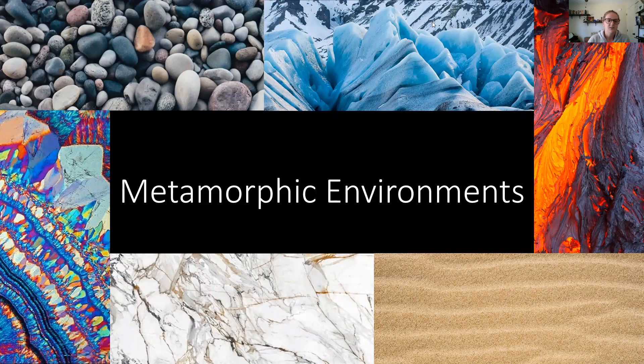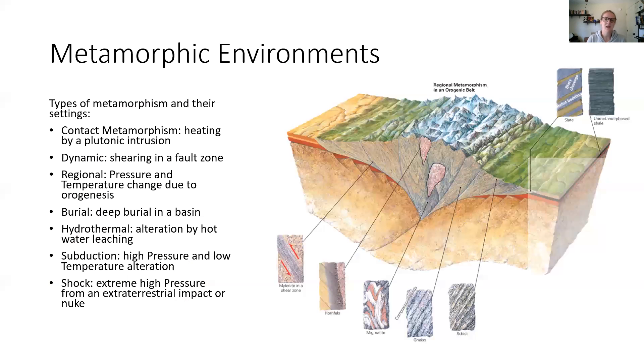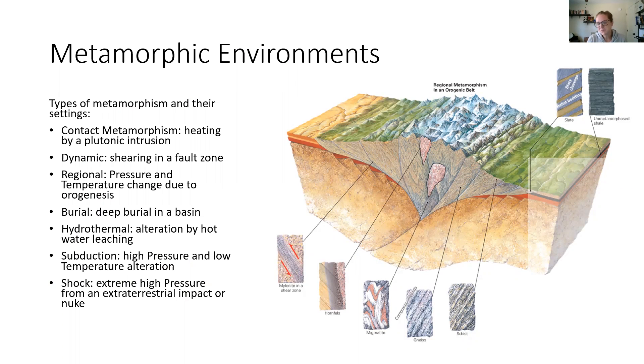All right, let's talk about metamorphic environments. Where on earth do the processes we've talked about actually occur? And as you guessed, anywhere you get a lot of pressure, heat, or chemically active hot fluids, mostly at convergent margins, hot spots, things like that.